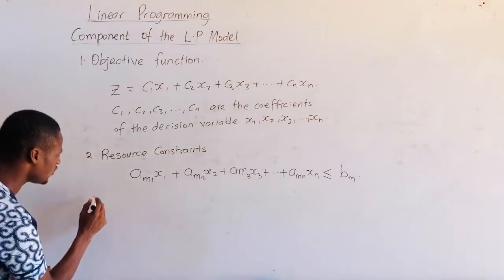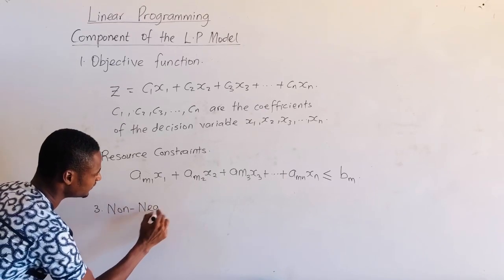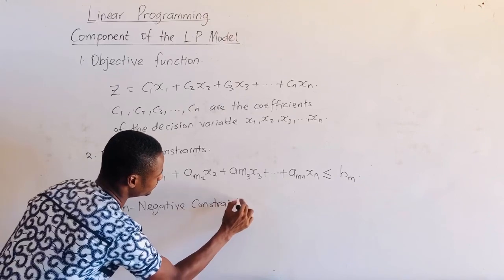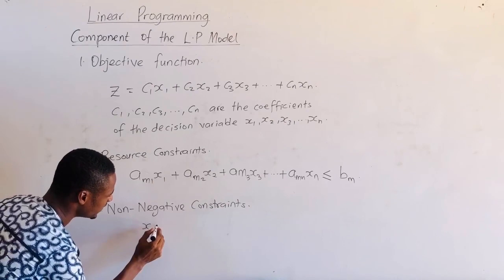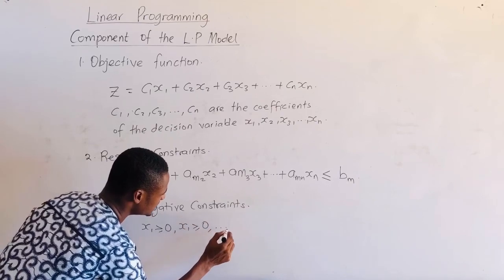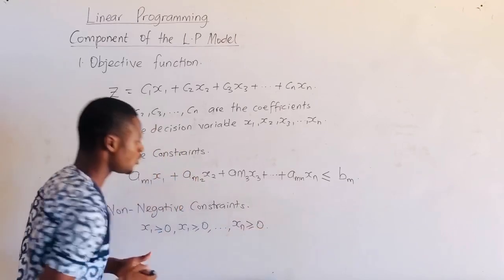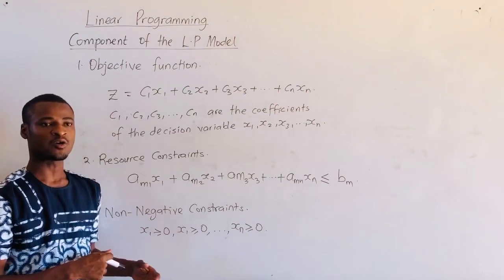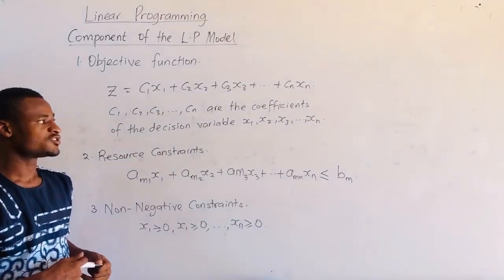The third component is the non-negative constraints, and this simply means that the decision variables are always greater than or equal to zero. So, all the decision variables in the linear programming model are greater than or equal to zero, and this is a non-negative constraint.